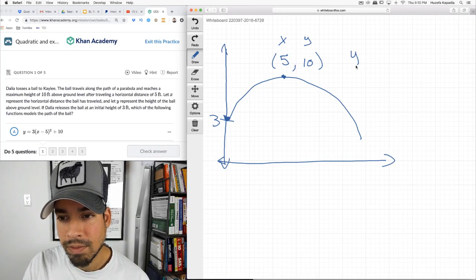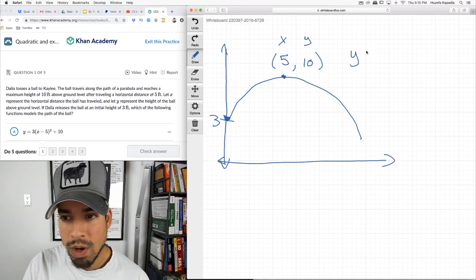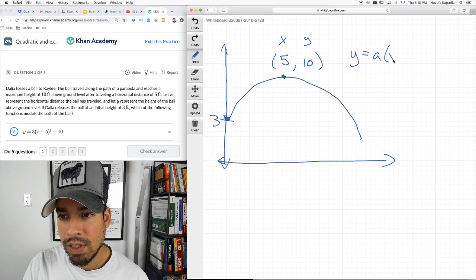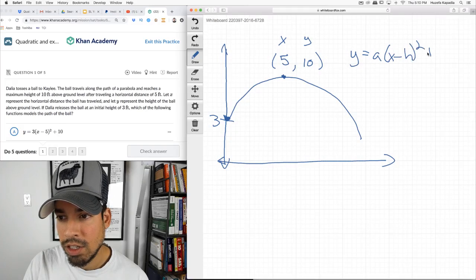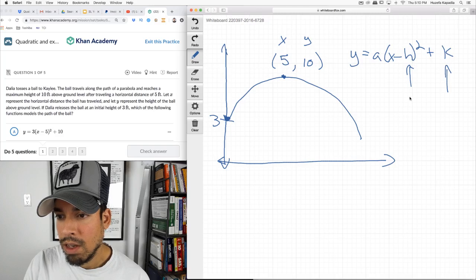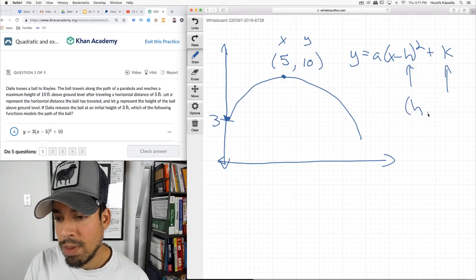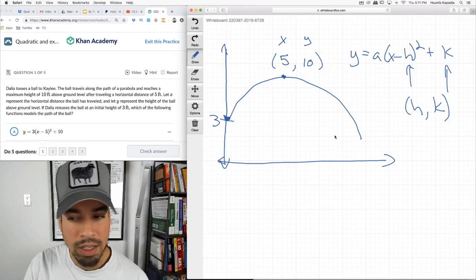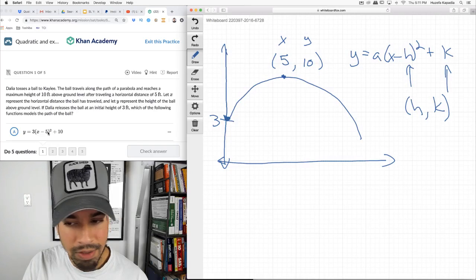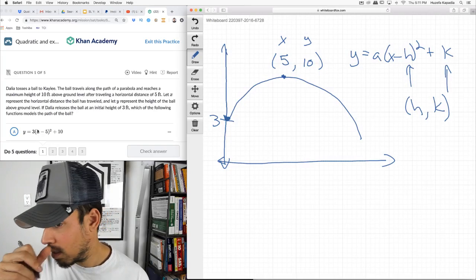Here's vertex form: Y equals A times X minus H squared plus K, where these are the values of the vertex. It's positive H when it's minus. So it makes sense that it would be X minus 5 squared plus 10 because this is the Y value of the vertex, the X value of the vertex. It's just that 3 doesn't make sense.